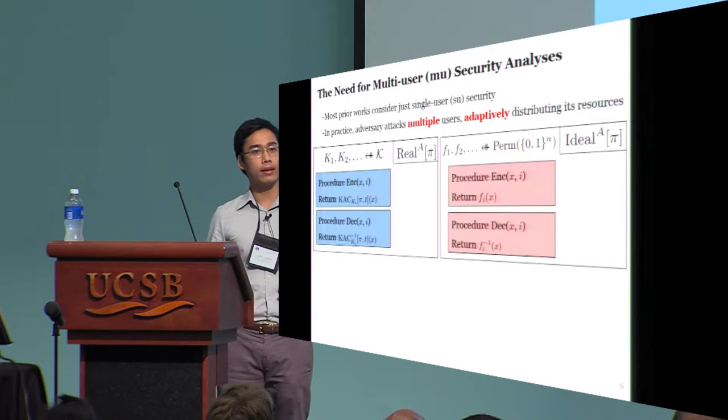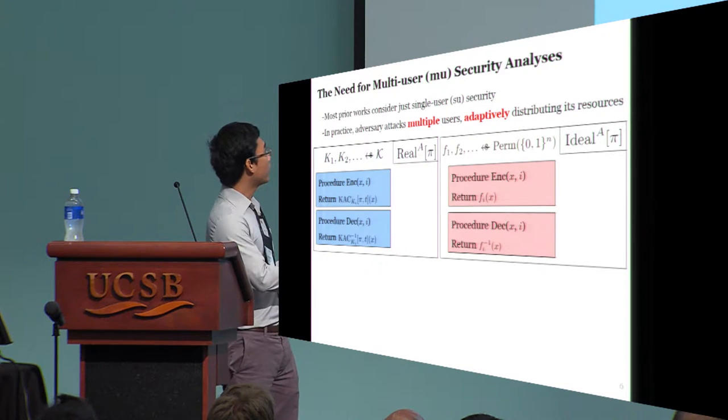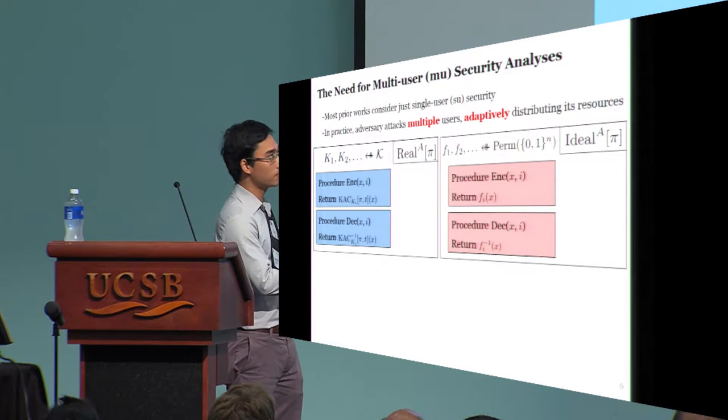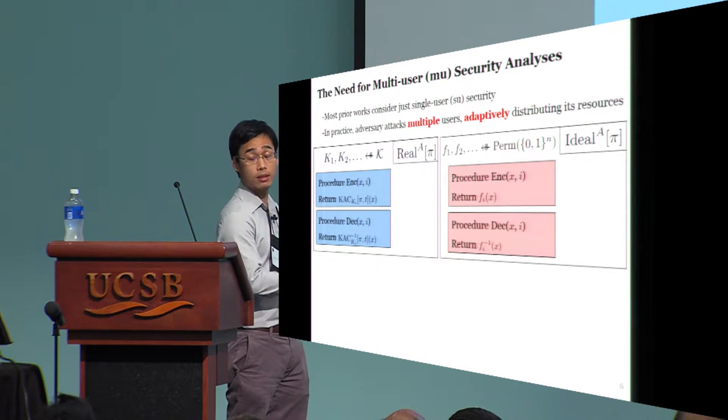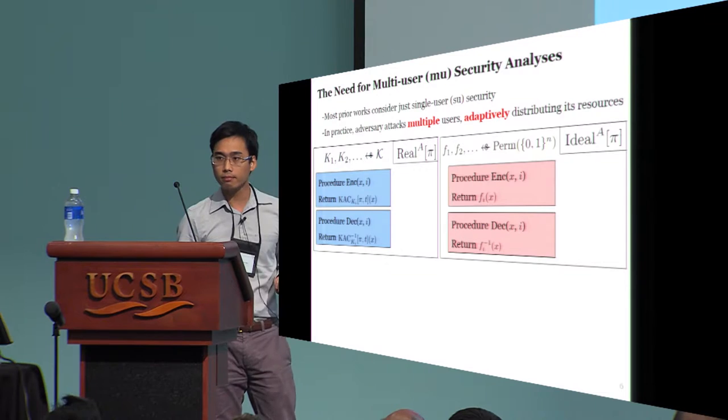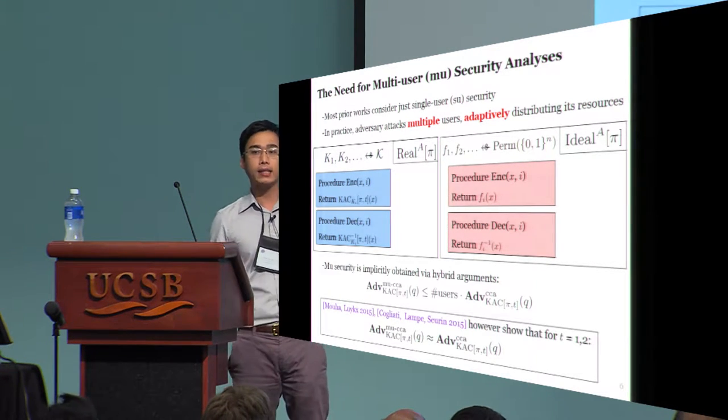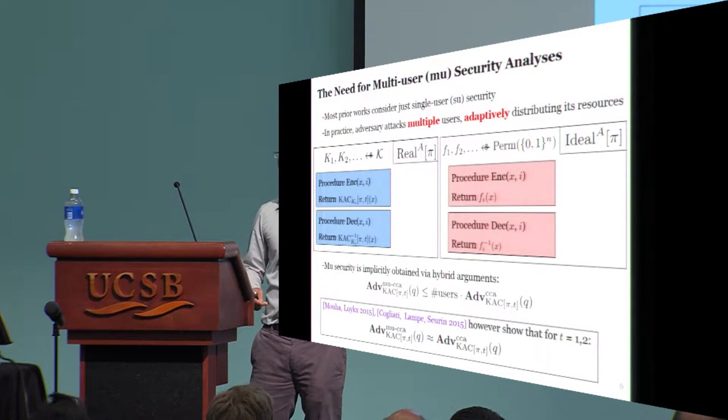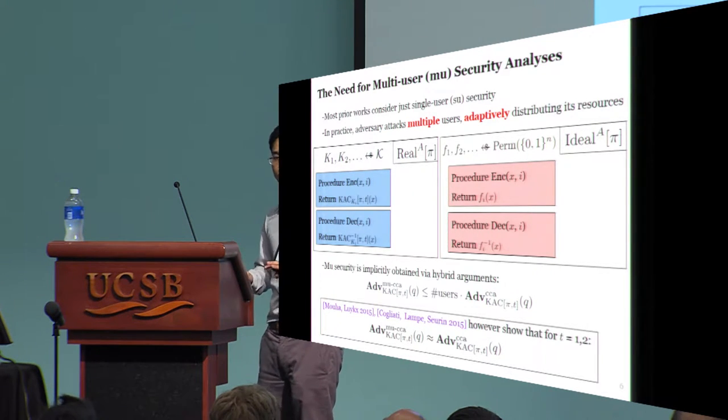To model multi-user security, in the real world, the oracle should implement many instances of the KAC block cipher, and likewise in the ideal world, it would implement many independent permutations F1, F2, and so on. If you want to get multi-user security from existing work, you have to use a hybrid argument. But then, there will be a degradation factor proportional to the number of users.